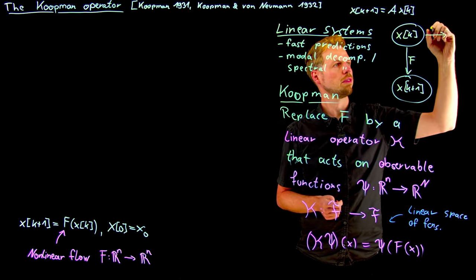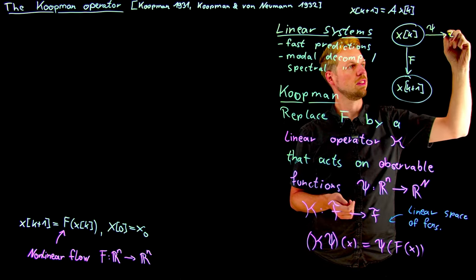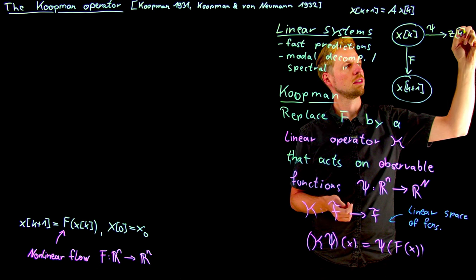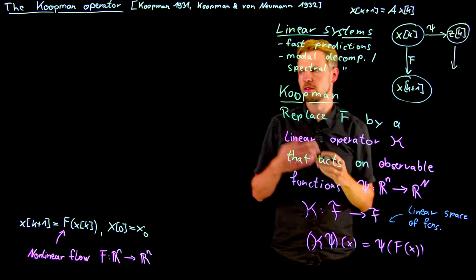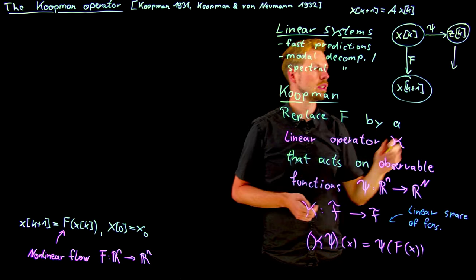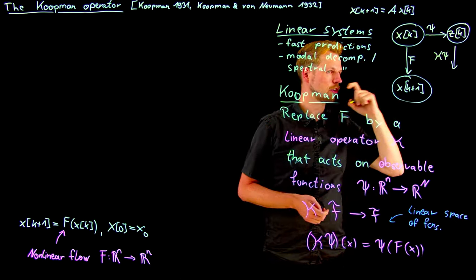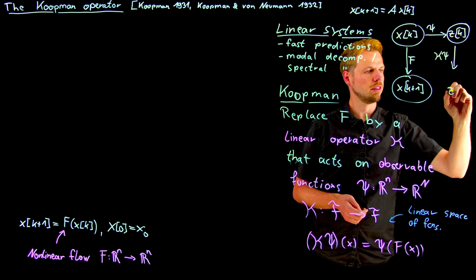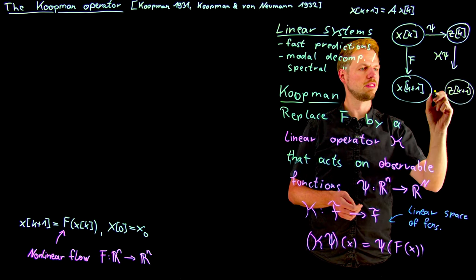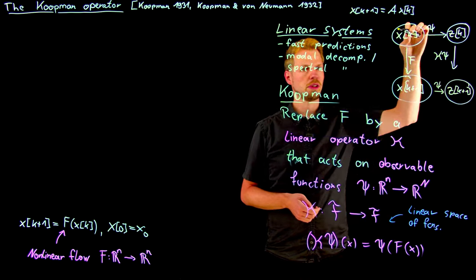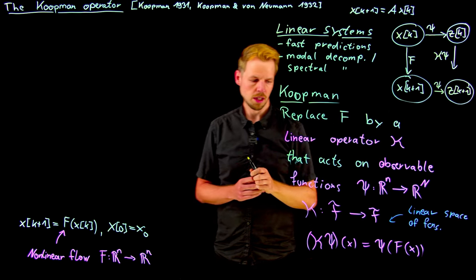So then what the Koopman operator provides us is a parallel system. So using this psi observable function, we get an observed quantity z_k that is propagated forward in time in a linear fashion using the Koopman operator that acts on the function. So what we get is z_{k+1}, which would be the same as if we just propagate forward the state in time and then use the observable function.